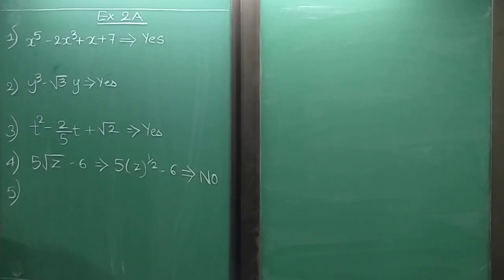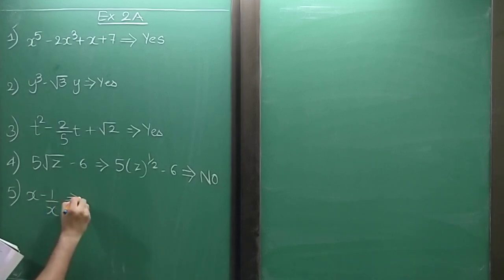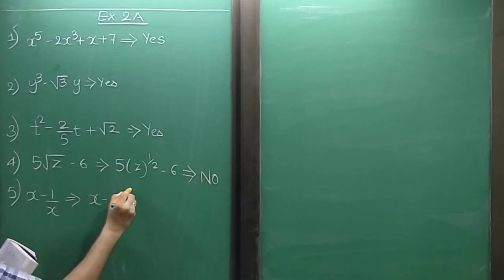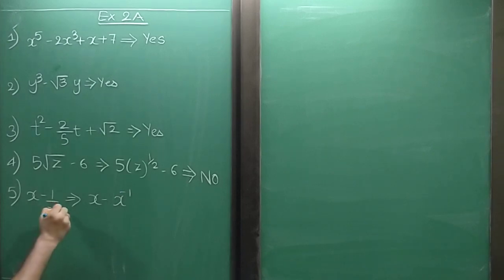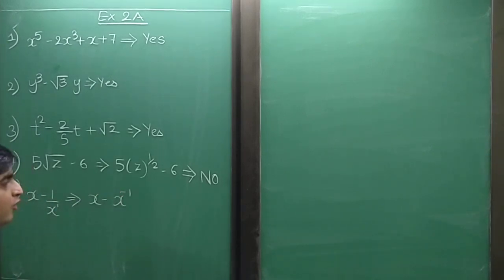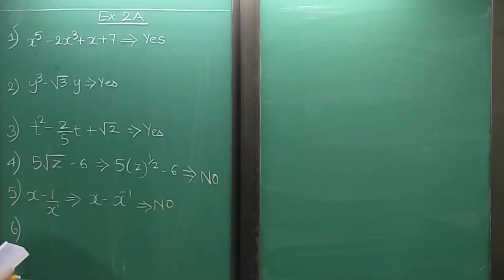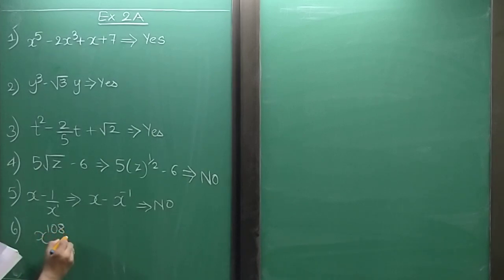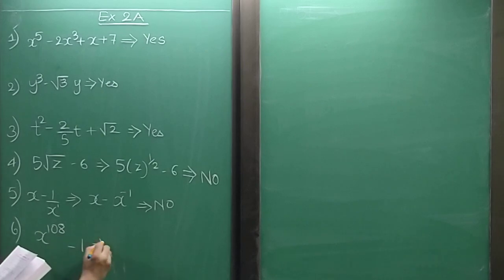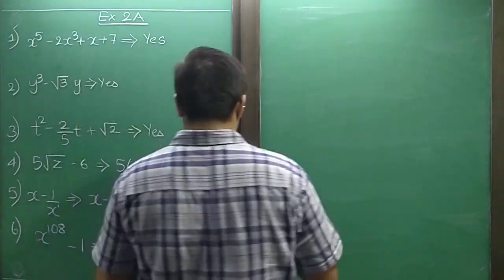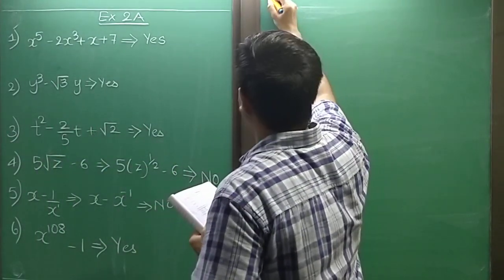Sum 5: x minus 1 upon x can be written as x minus x to the power negative 1. This is not a whole number, so it is not a polynomial. Sum 6: x raise to 108 minus 1. Yes, it is a polynomial because the power is 108.